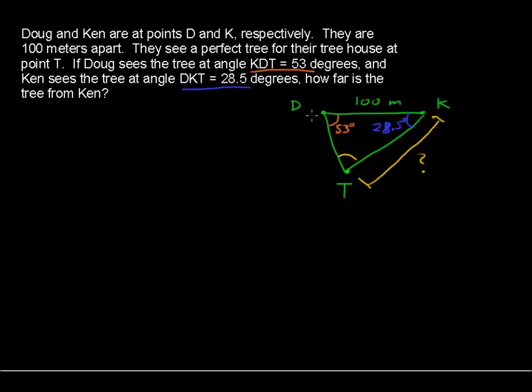First let's find this angle DTK. Well, angle DTK is going to equal 180 degrees of the triangle minus what's being used up here, or minus the other angles. Minus 53 degrees for one angle, minus 28.5 degrees for the other angle, and that equals angle DTK equals 98.5 degrees. I'll label that 98.5 degrees.